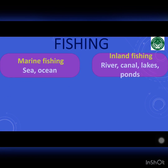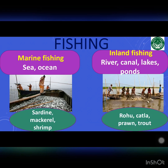Fishing is of two types: marine and inland. Catching fish from the sea is called marine fishing. It is done in the states located along the coast. Fishermen catch sardine, mackerel and shrimp from the sea. Catching fish from rivers, canals, lakes and ponds is called inland fishing. Fishermen catch rohu, katla, freshwater prawn and trout.